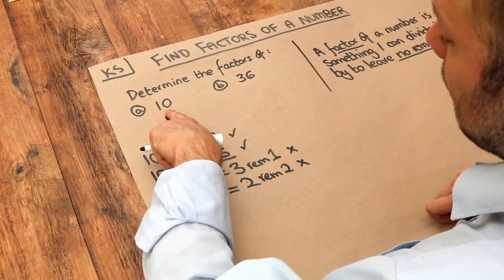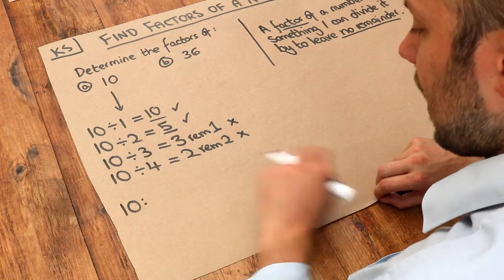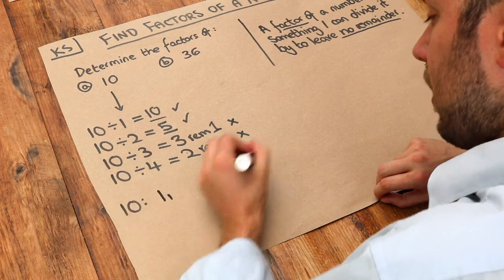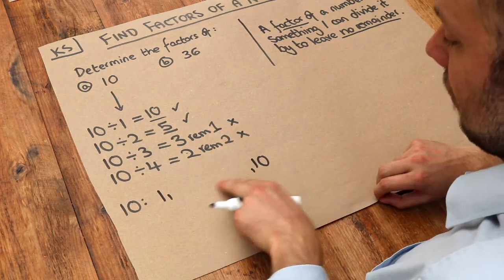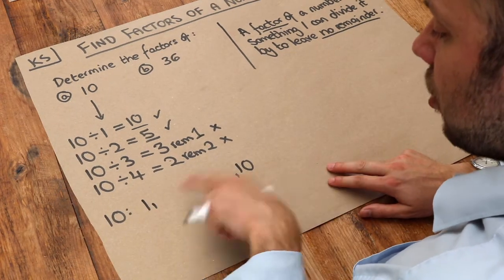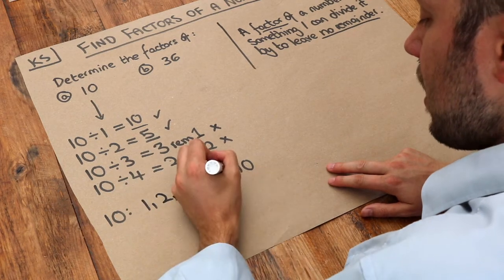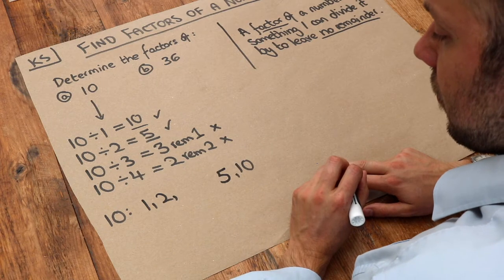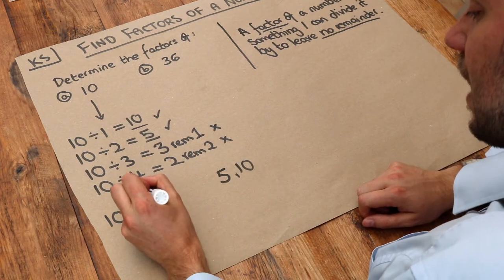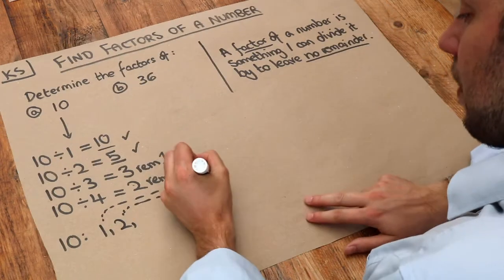The easiest way to list the factors of a number is to do them in pairs. Think of pairs of numbers that multiply to give 10. 1 times 10 is 10, which means 1 and 10 are factors. Notice I've left a gap in the middle, and I'm gradually going to go inwards. 2 times what gives you 10? It's 2 times 5, so 2 and 5 are factors. We saw that 3 and 4 weren't factors, so we've finished. These are known as factor pairs.